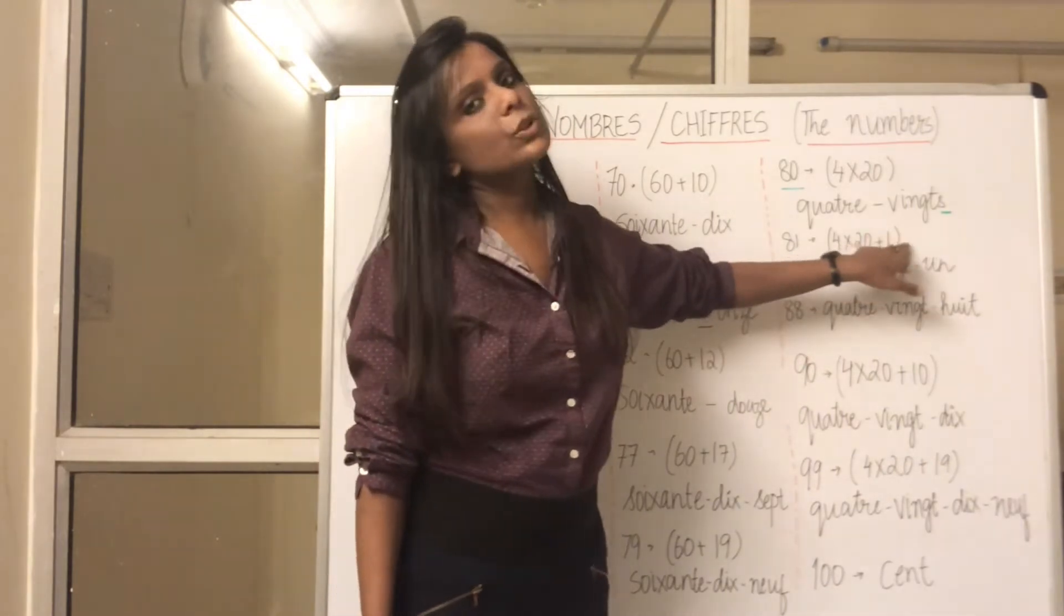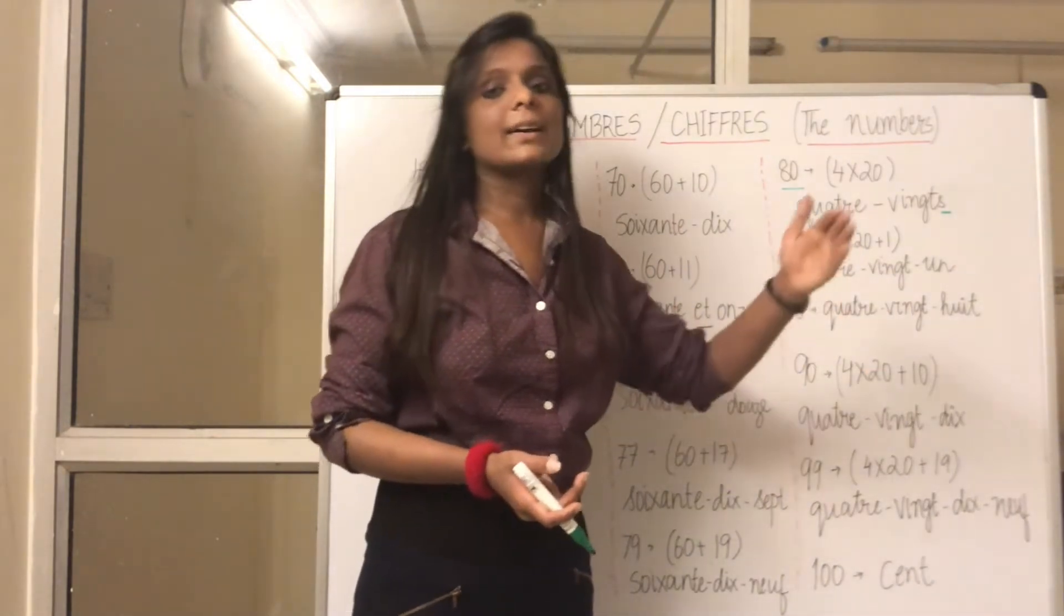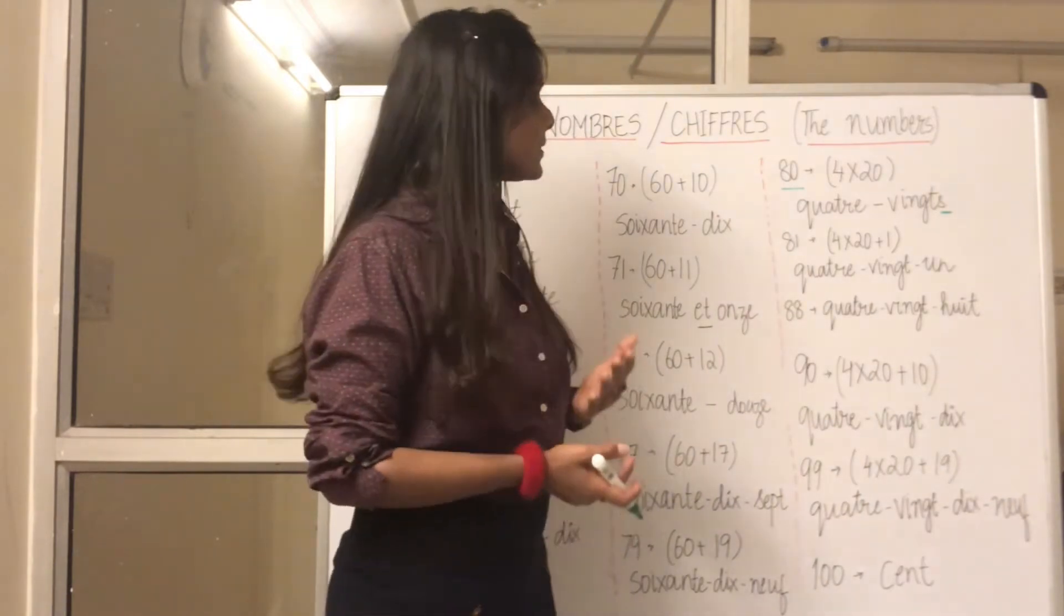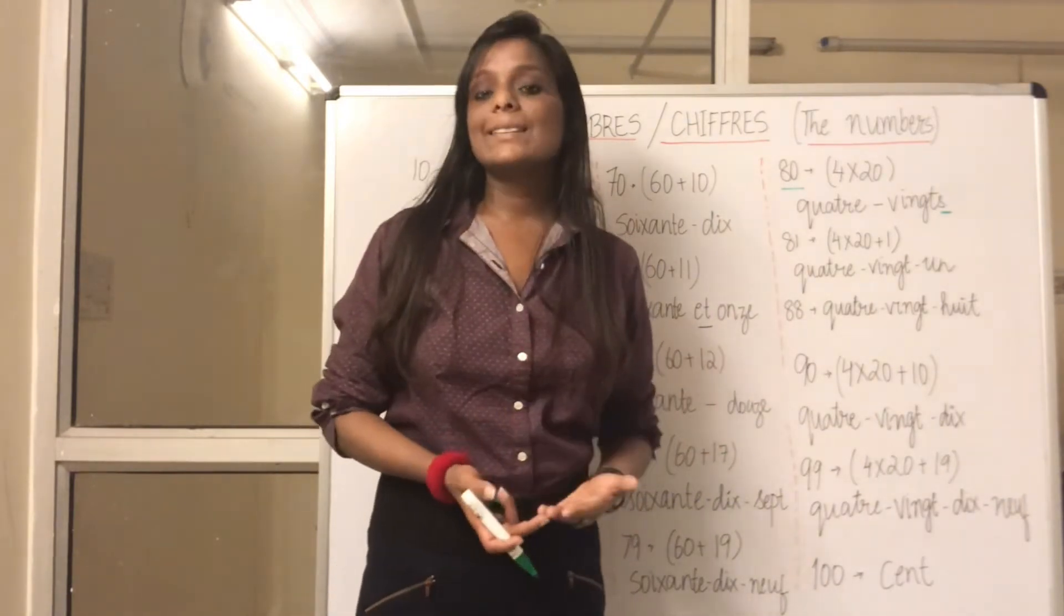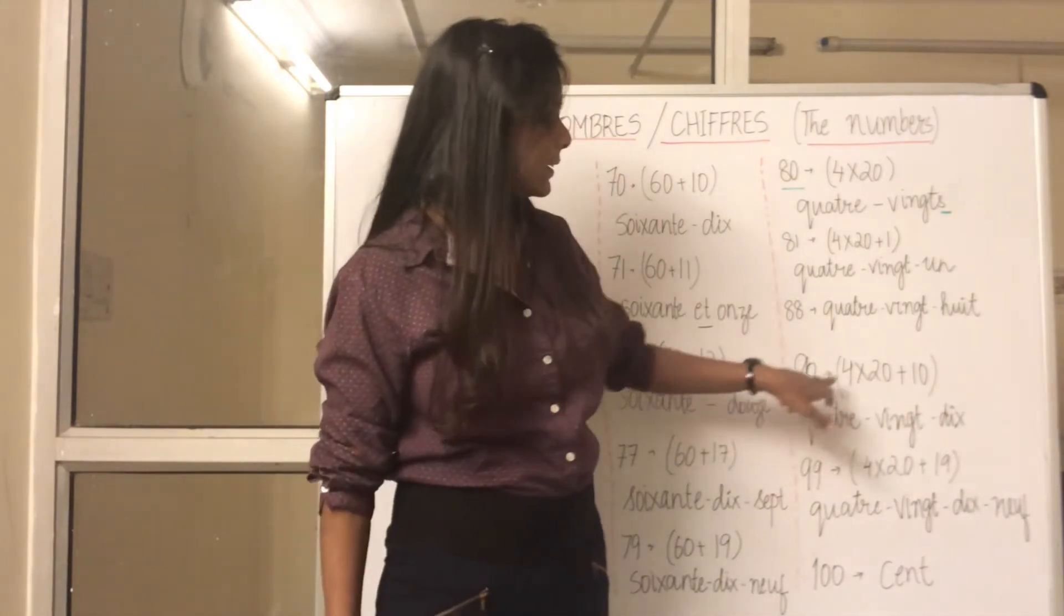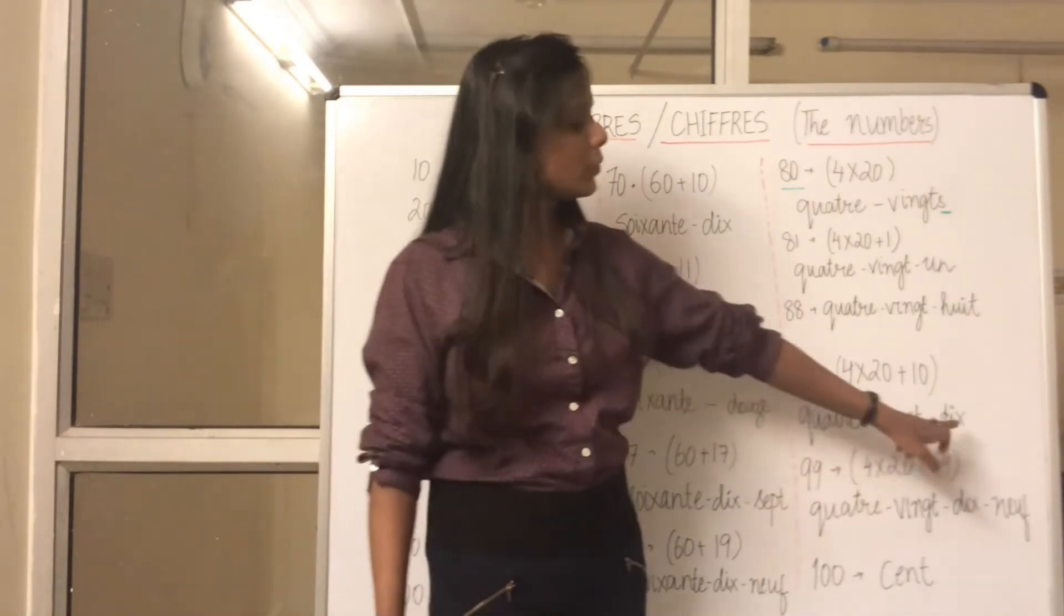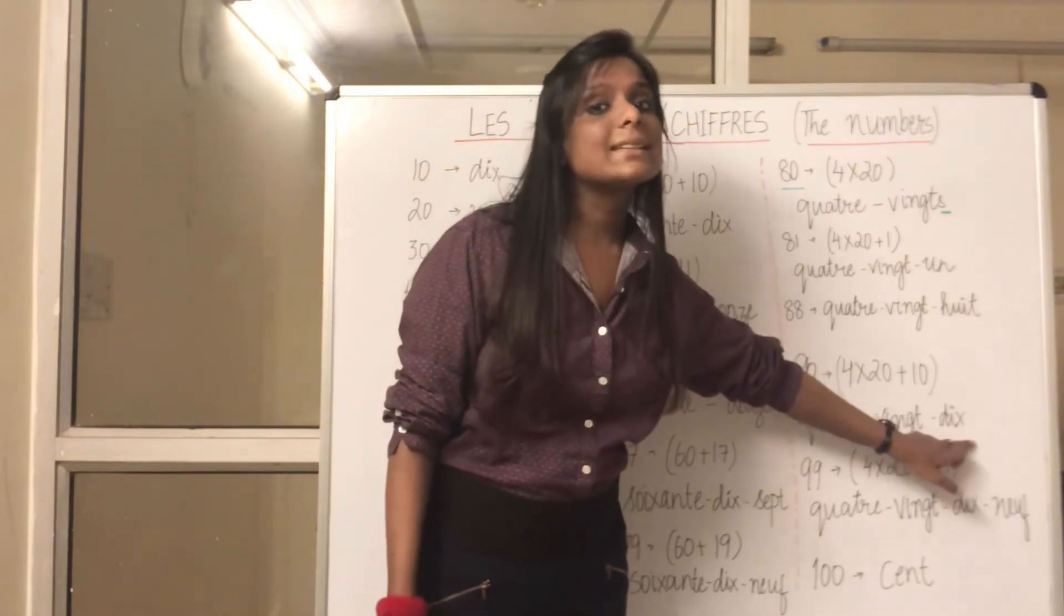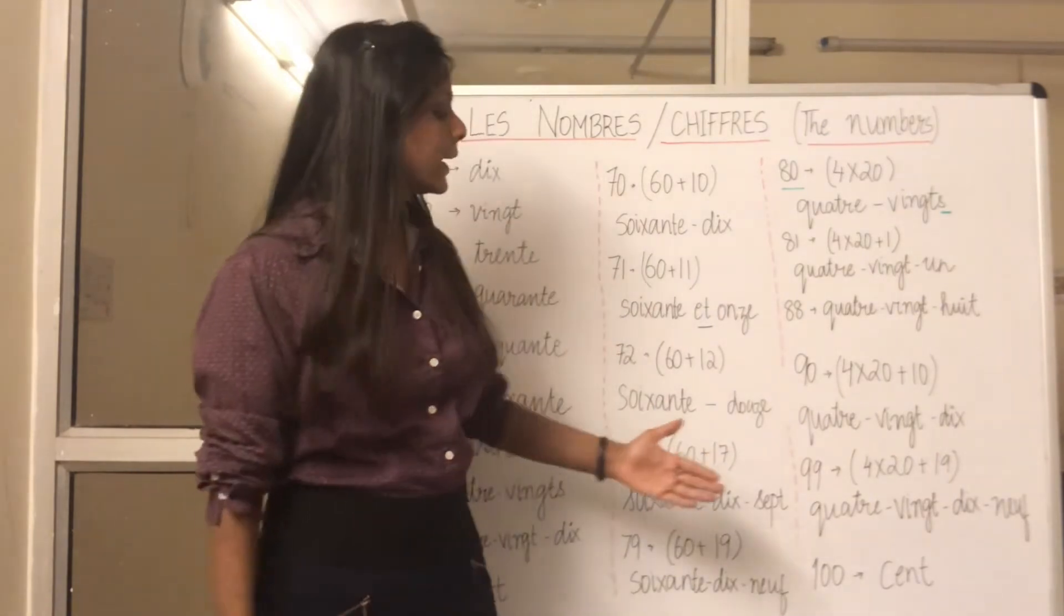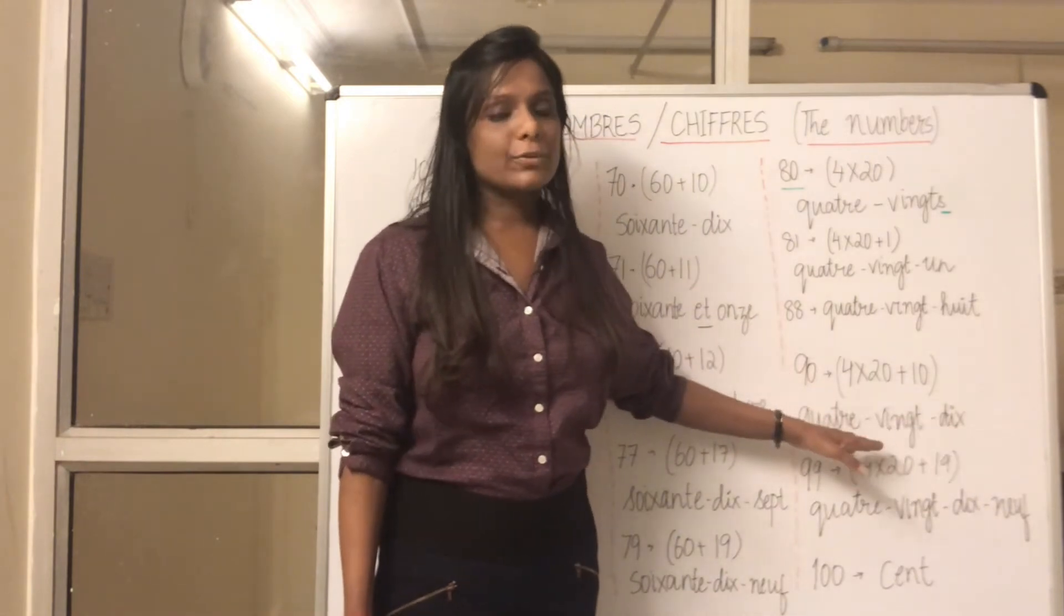Then 82 will be 4, 20, and 2, so quatre-vingt-deux. 90 becomes quatre-vingt-dix. So I told you when the number is ending with dix, the following counting will start from onze, douze, treize like that. So again 91 will be written as quatre-vingt-onze with a hyphen.